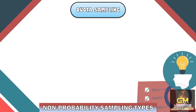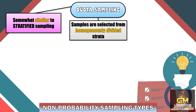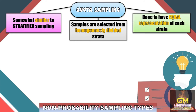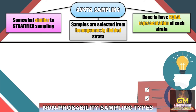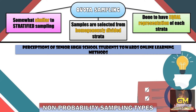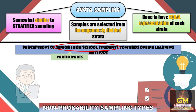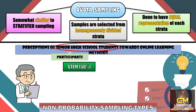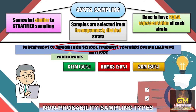Now let's focus on quota sampling. Quota sampling is somewhat similar to stratified sampling in a way that the samples are selected from homogenously divided strata. Quota sampling is conducted in order to have equal representation of each particular stratum. For example, in a study conducted to determine the perceptions of senior high school students towards online learning methods, the participants are senior high school students. The researcher will have to select participants from the different strands offered by the senior high school department — namely Science, Technology, Engineering, and Mathematics (STEM), which is 50% of the overall population, and Humanities and Social Science, which is 20% of the overall senior high school population. From there, the researcher would then compute how many members will be taken from each particular strand.